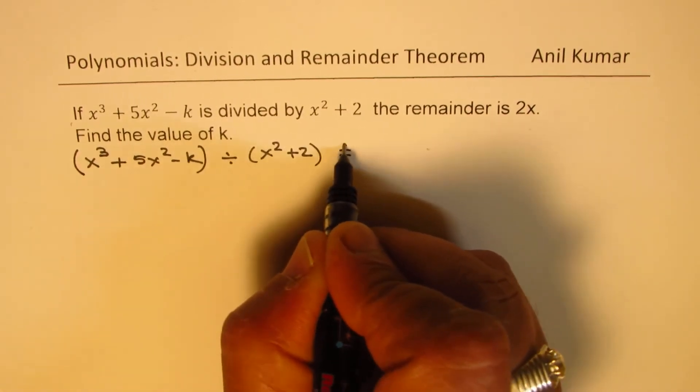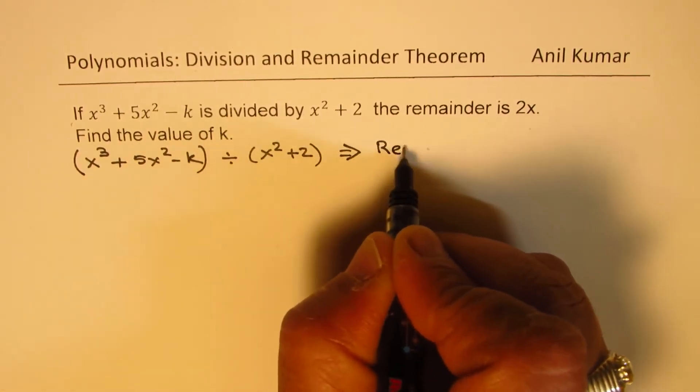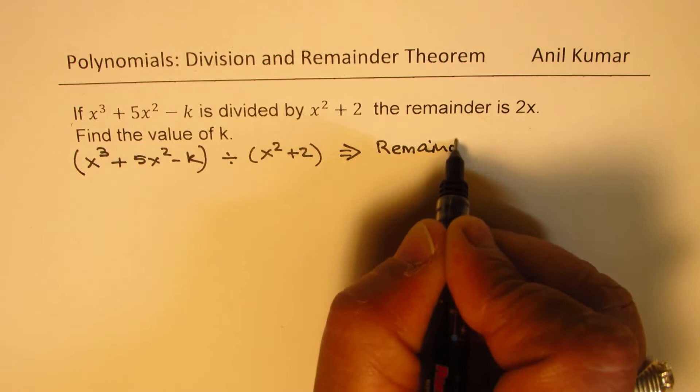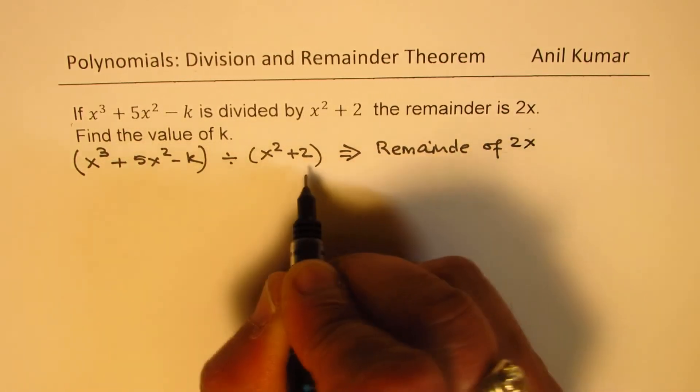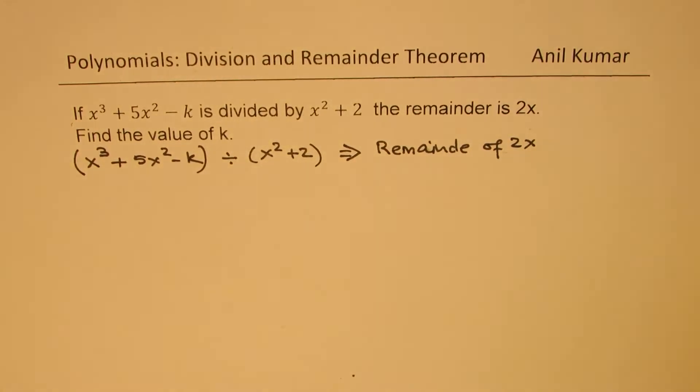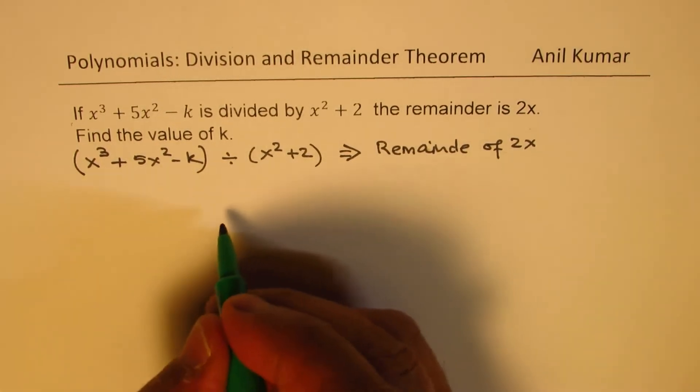And we know that results in a remainder of 2x. So that should give us the value for k. OK, so let's perform long division.